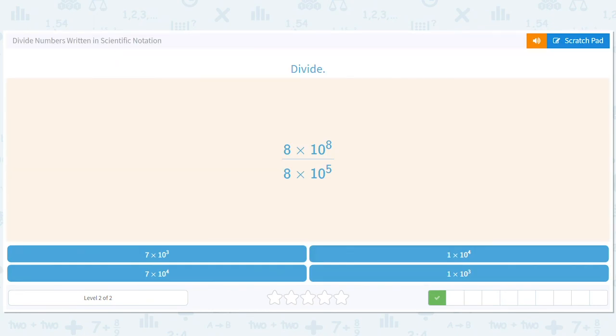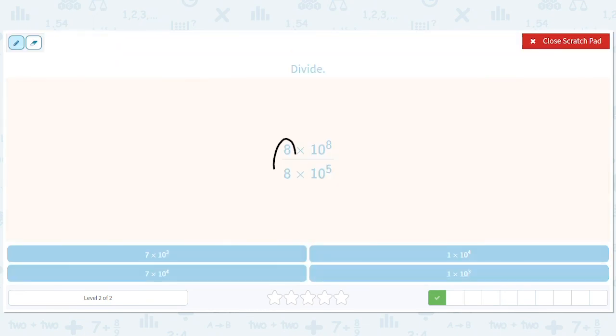How about this? Oh, you see it. That's 1. That's 10 to the 3. So we have 1 times 10 to the 3.